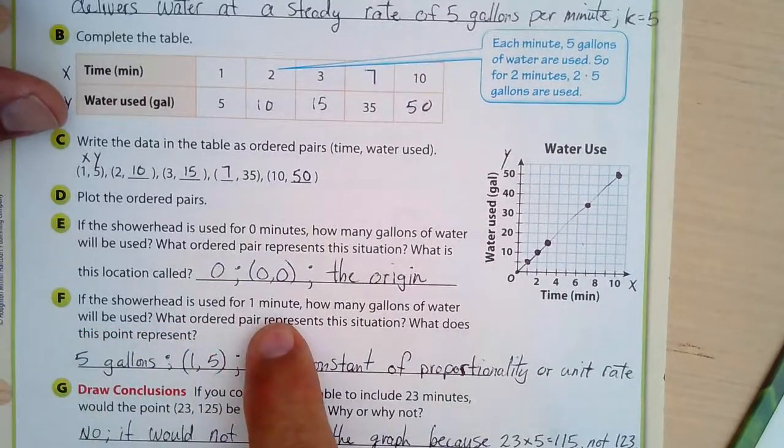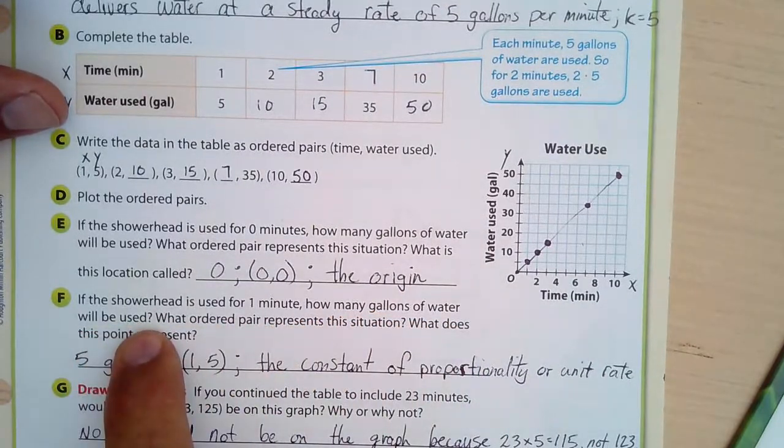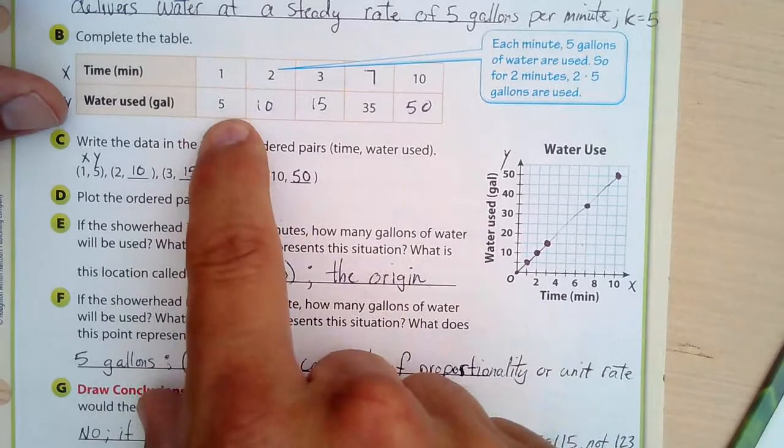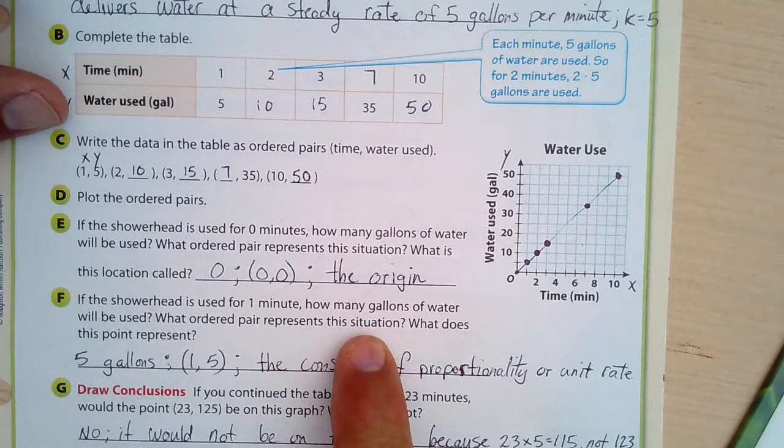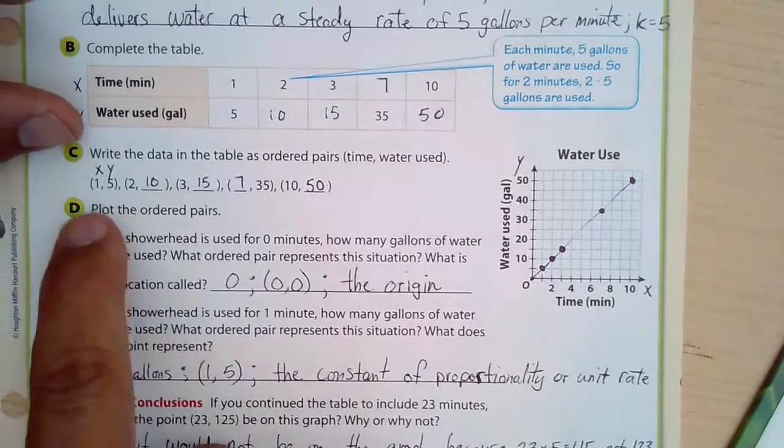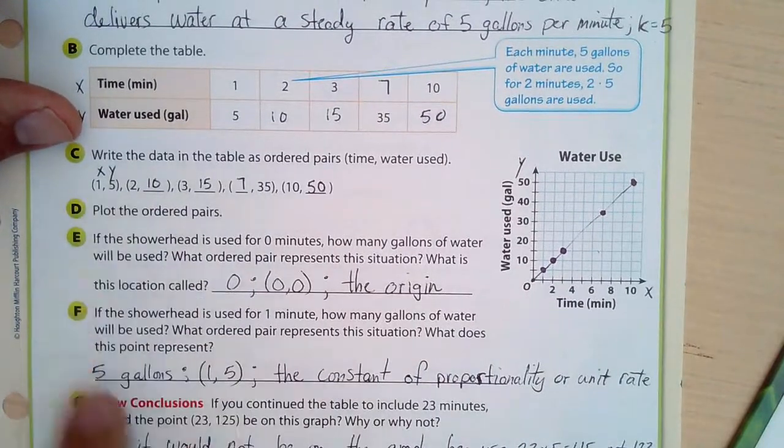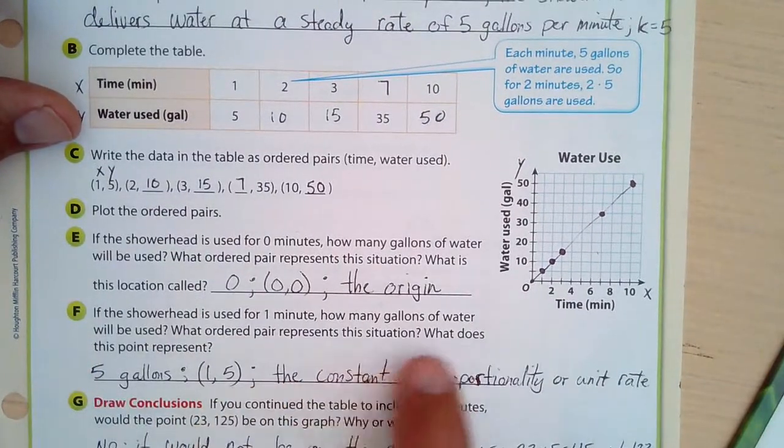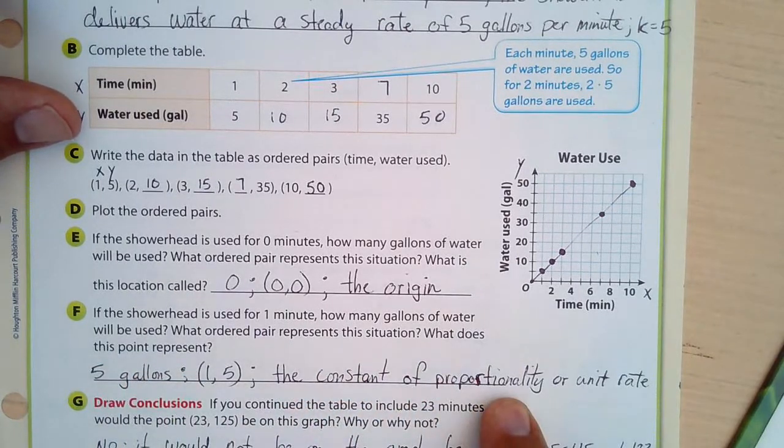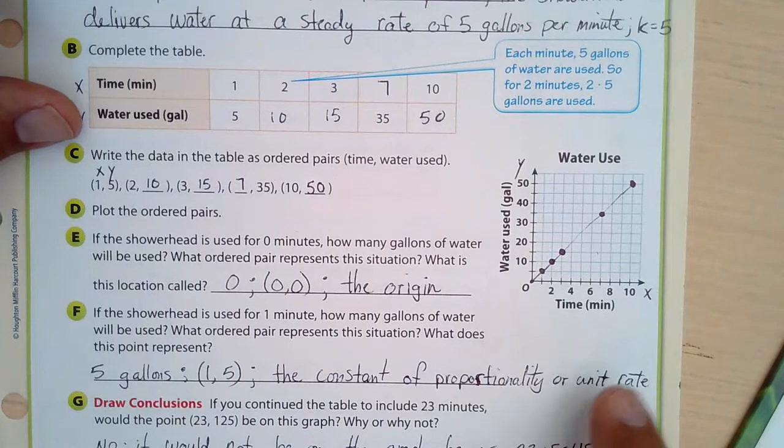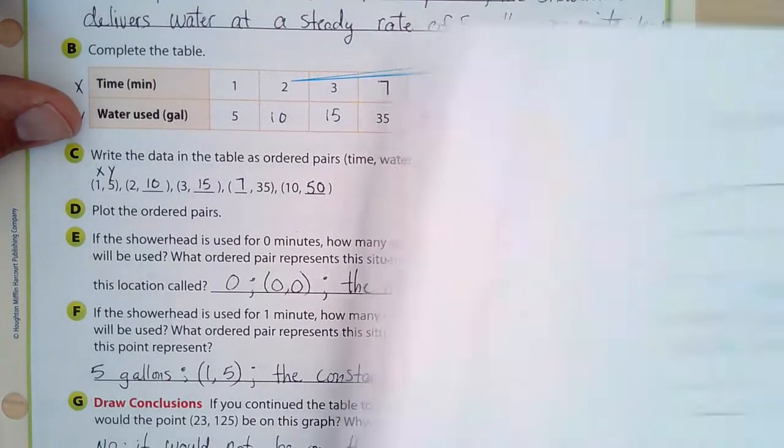If the shower head is used for a minute, how many gallons of water will be used? One minute, five gallons. What ordered pair represents the situation? It was 1, 5. And what does this point represent? Well, 1, 5 is our constant of proportionality. That is our unit rate.